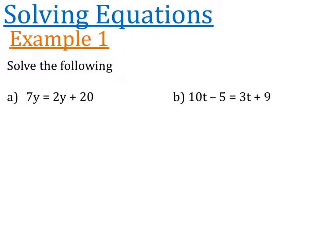The first question says 7y is equal to 2y plus 20. What I'm going to do is move all of the letters to the left hand side of the equation by subtracting 2y from this side. If I take 2y away from the right, I'm left with 20, which is exactly what I want, so I'm also going to take 2y away from the left. 7y take away 2y is 5y, and 2y take away 2y is 0, and the only thing we have left is 20.